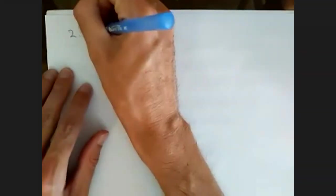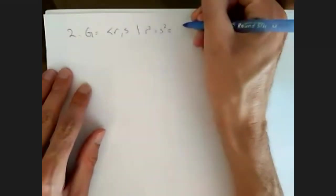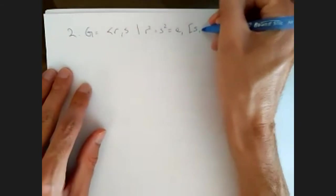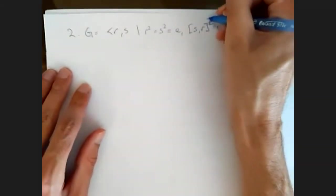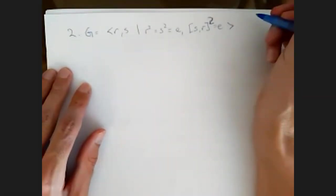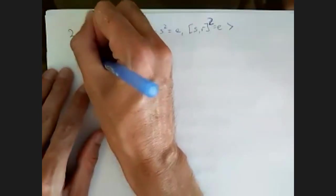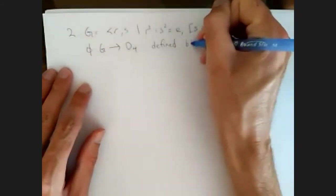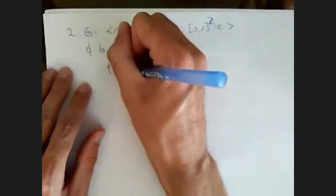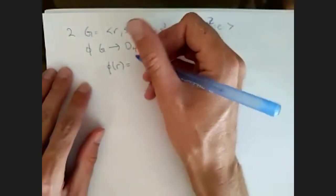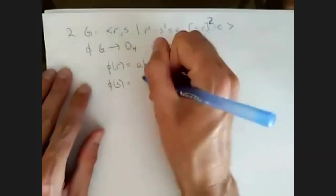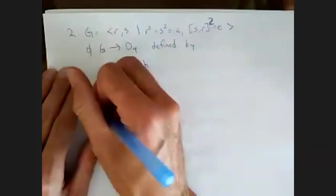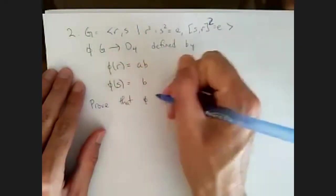Question two: G is the group generated by R and S, where R² equals S² equals the identity, and the commutator of S and R squared also equals the identity. And then we have a homomorphism phi — a possible homomorphism from D4 — defined by phi(R) = AB and phi(S) = B. And we're supposed to prove that phi defines a homomorphism.